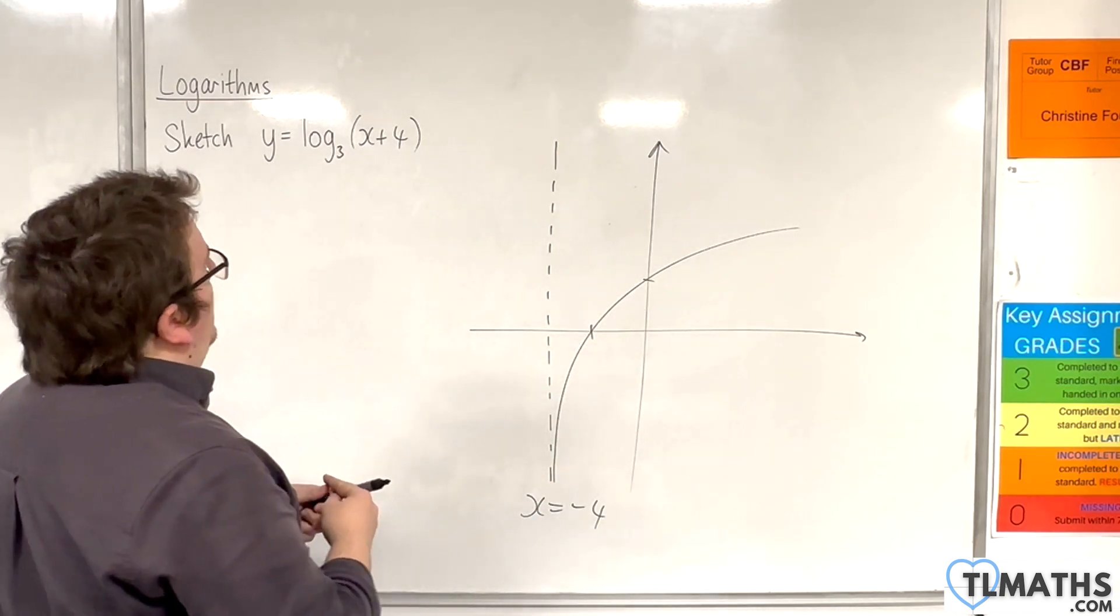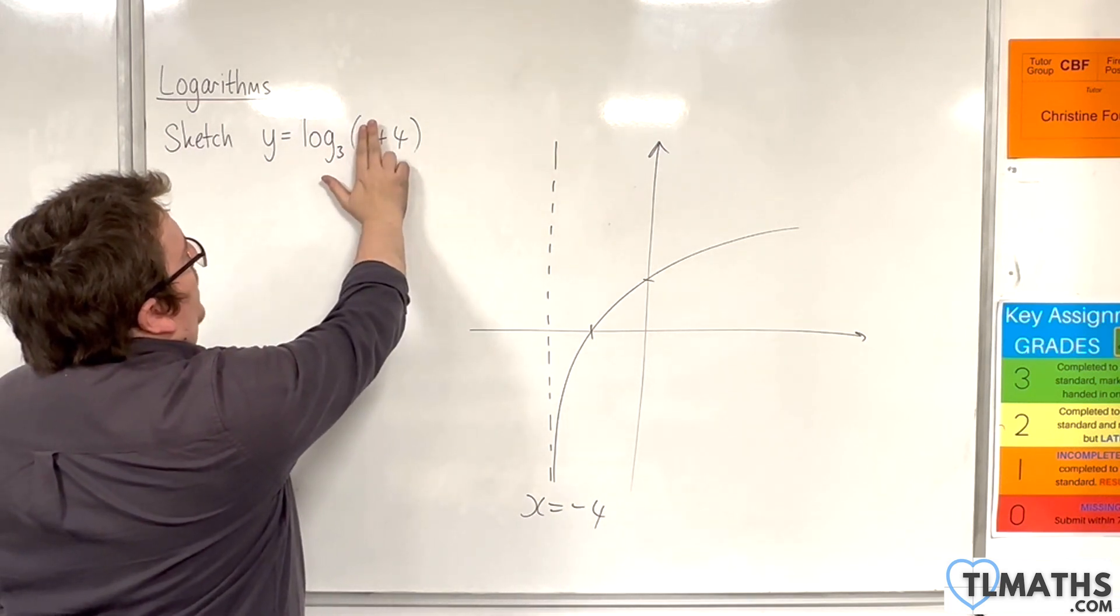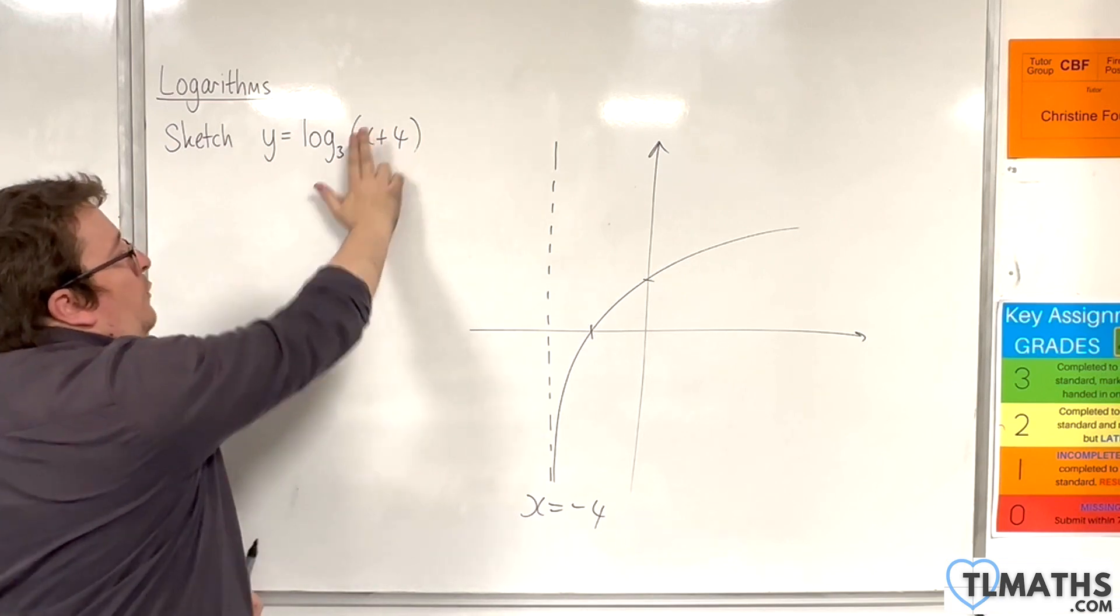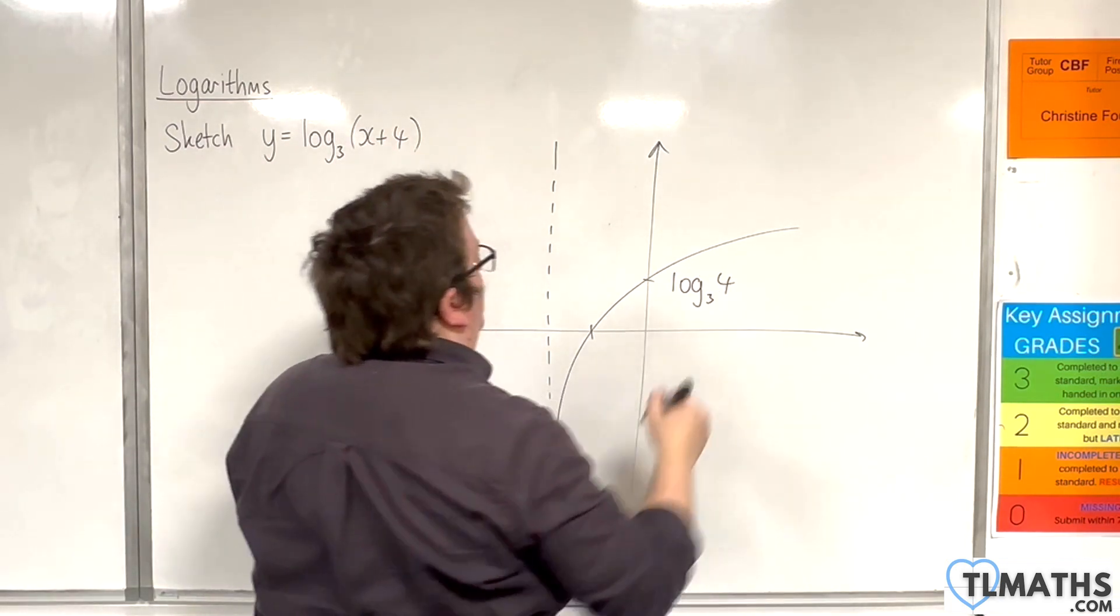It will cross the y-axis when x is 0. That means we'll have log base 3 of 4, and I'm going to leave it in that form as an exact form.